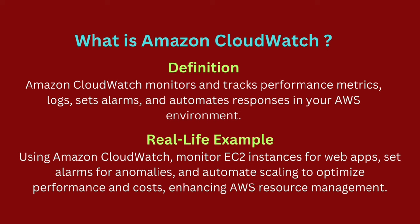For instance, when managing a group of EC2 instances for a web app, you can use CloudWatch to monitor metrics like CPU utilization and network traffic in real-time. If a metric exceeds a set threshold, CloudWatch triggers an alarm, alerting your team to investigate potential issues quickly. You can also automate scaling based on workload changes, ensuring your app maintains performance and cost efficiency.